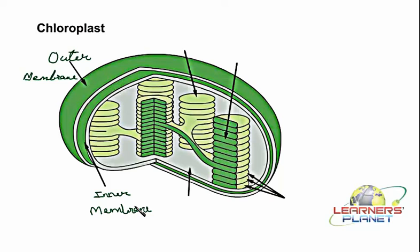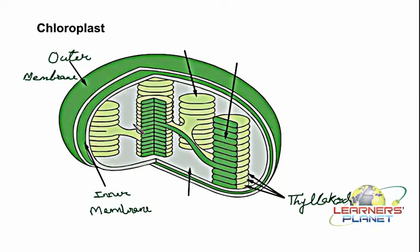As we concentrate on the inner membrane, we remember that inner membrane is not smooth. The outer membrane is actually smooth, but the inner membrane has folds inside. These folds are arranged in layers, and a single fold inside this group is actually known as the thylakoid. The thylakoid is the region where the pigment chlorophyll is actually present — in the case of chloroplast.